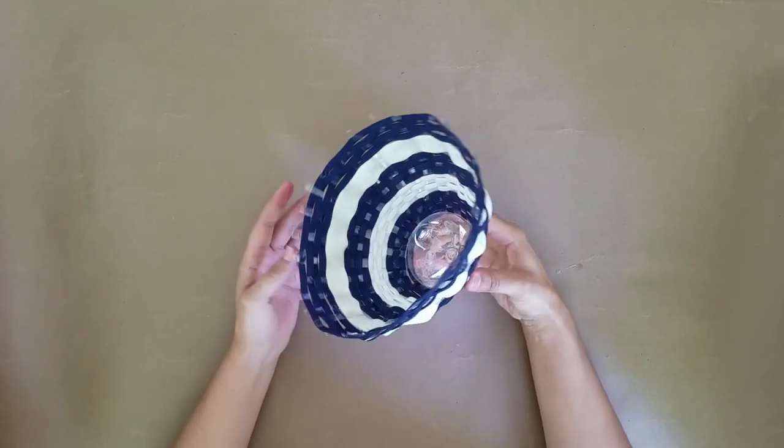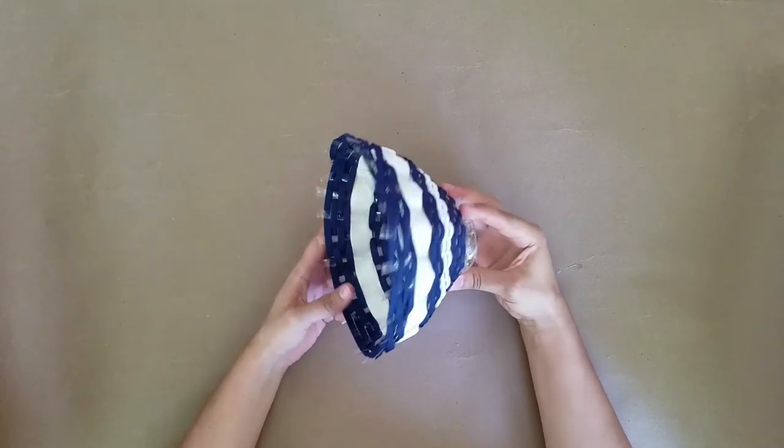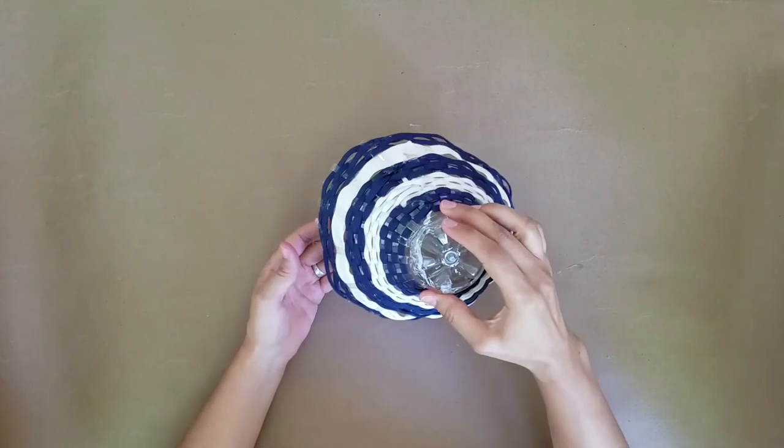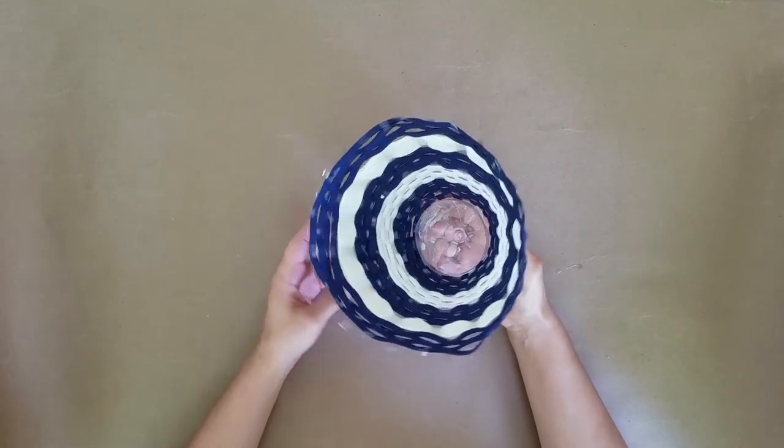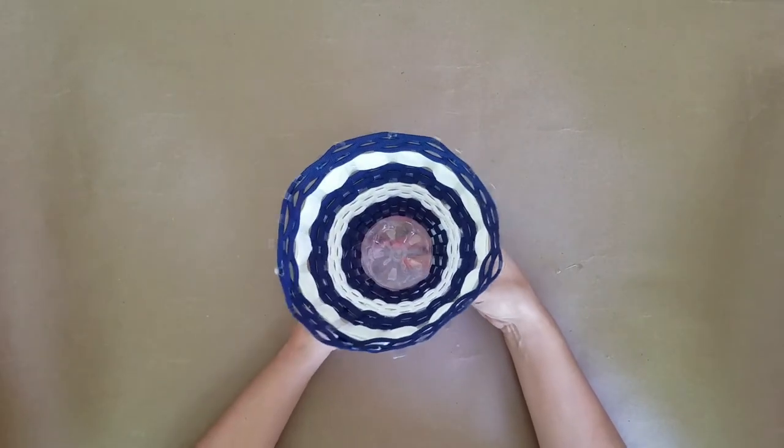You can pause this video or scroll back to any step if you need to. For today's Studio at Home project, I'm going to show you how to create a woven bowl using a recycled plastic bottle, inspired by the work of the artist Sheila Gallagher.